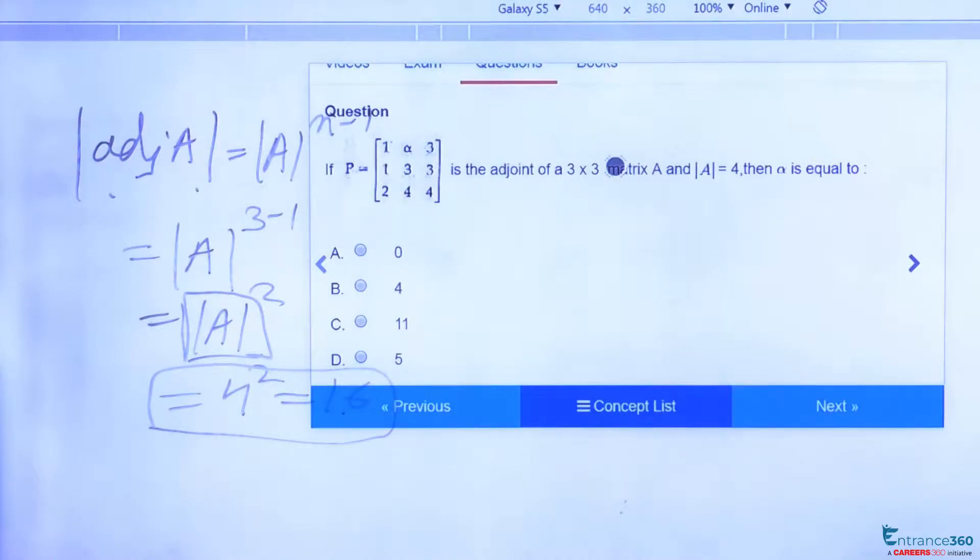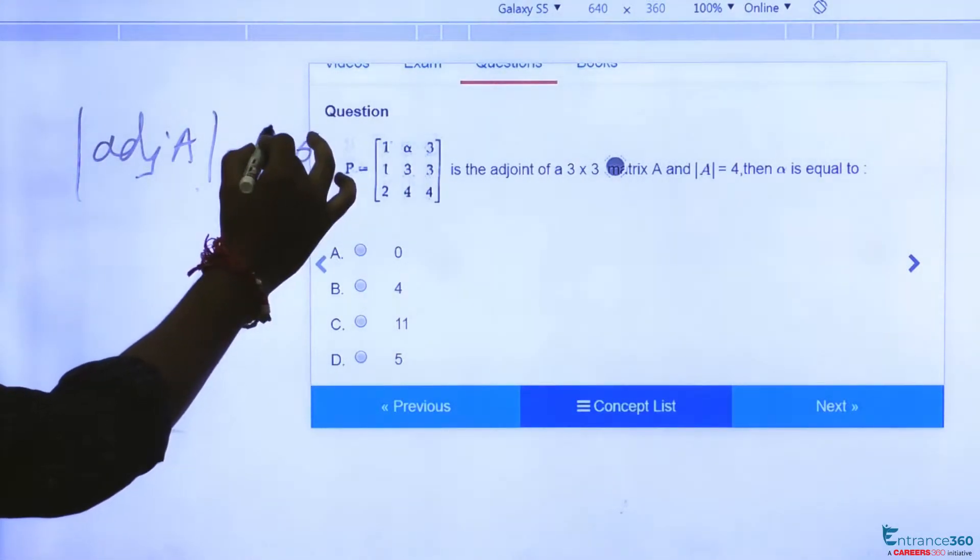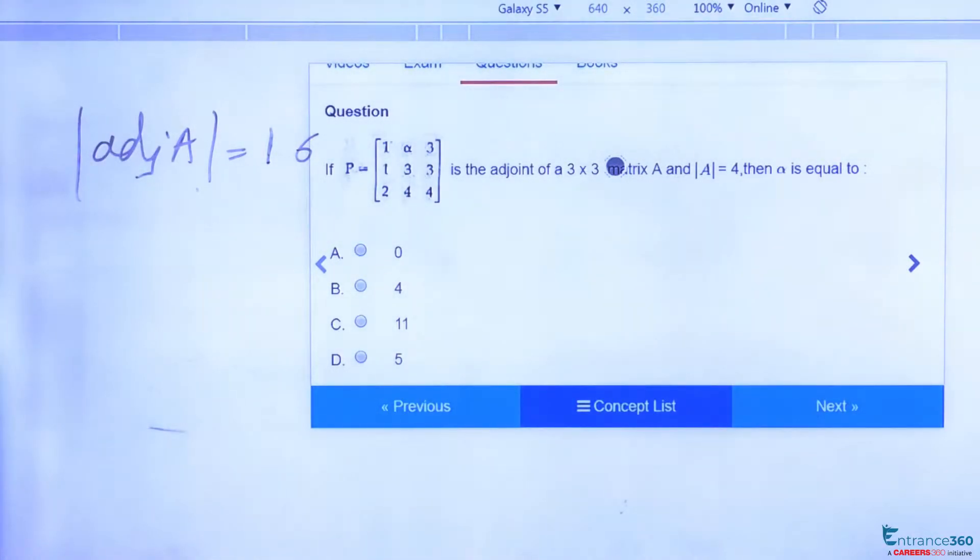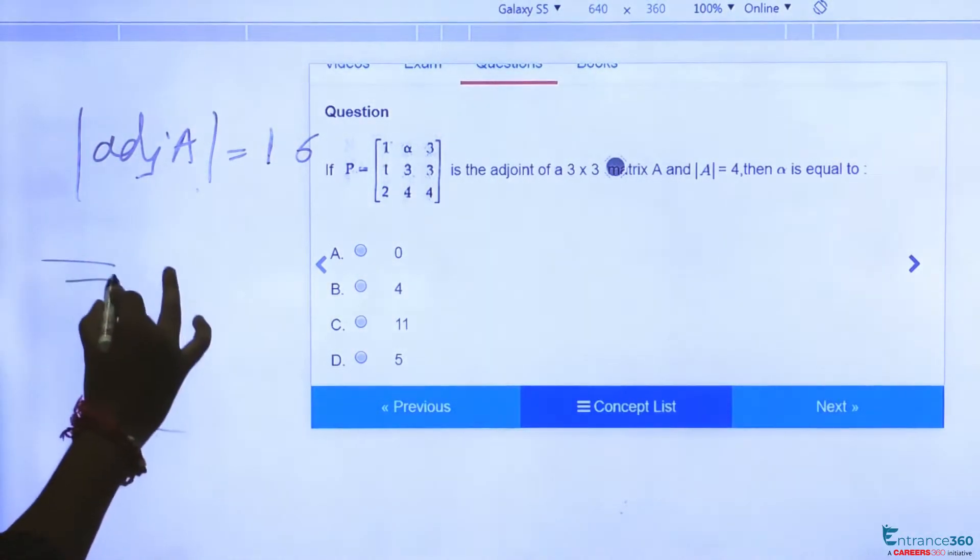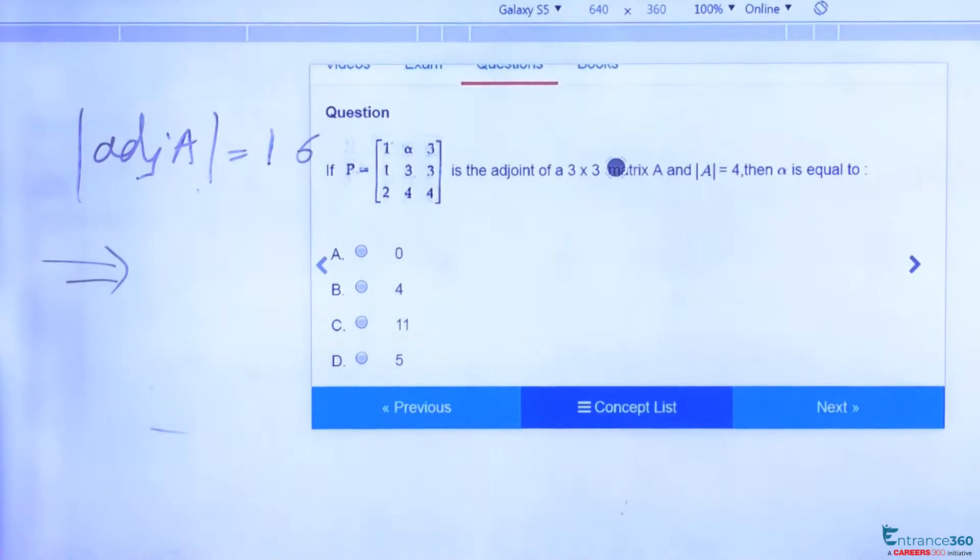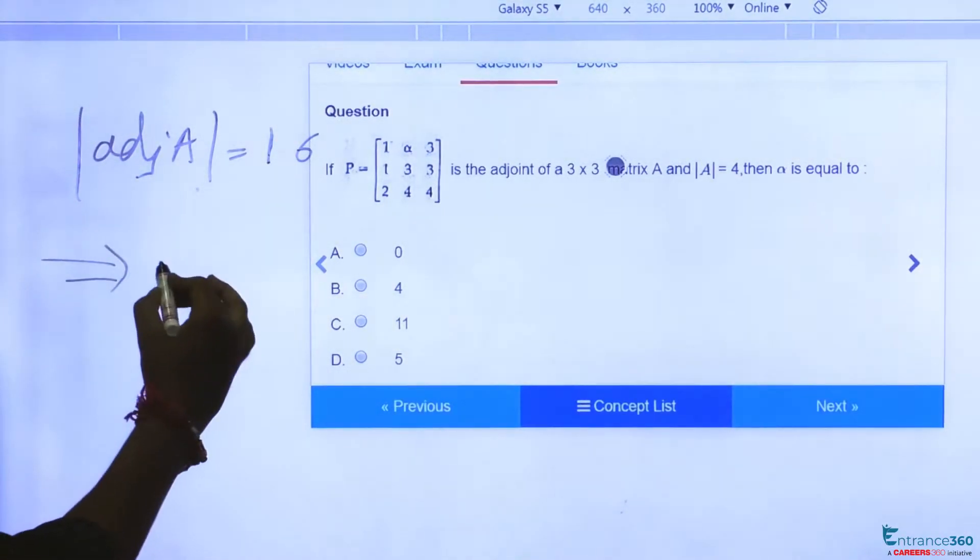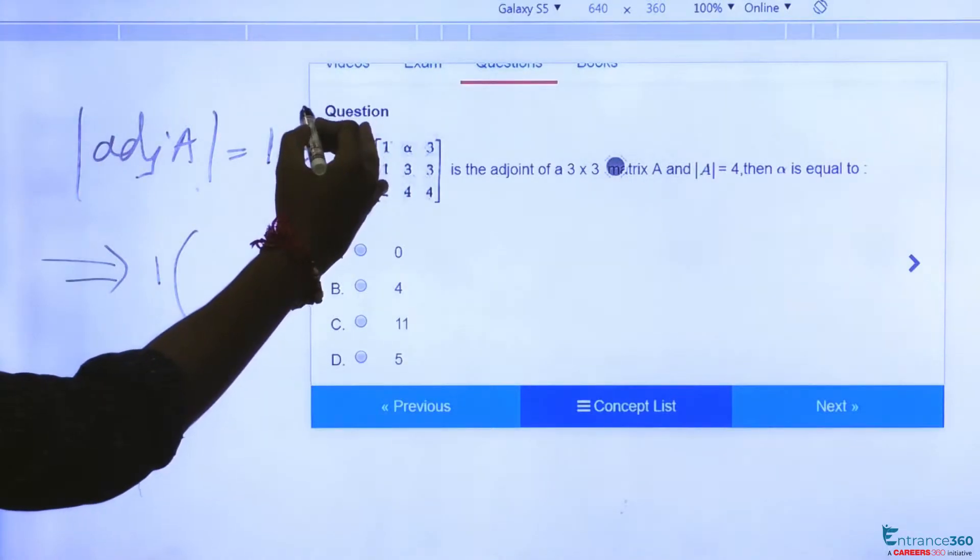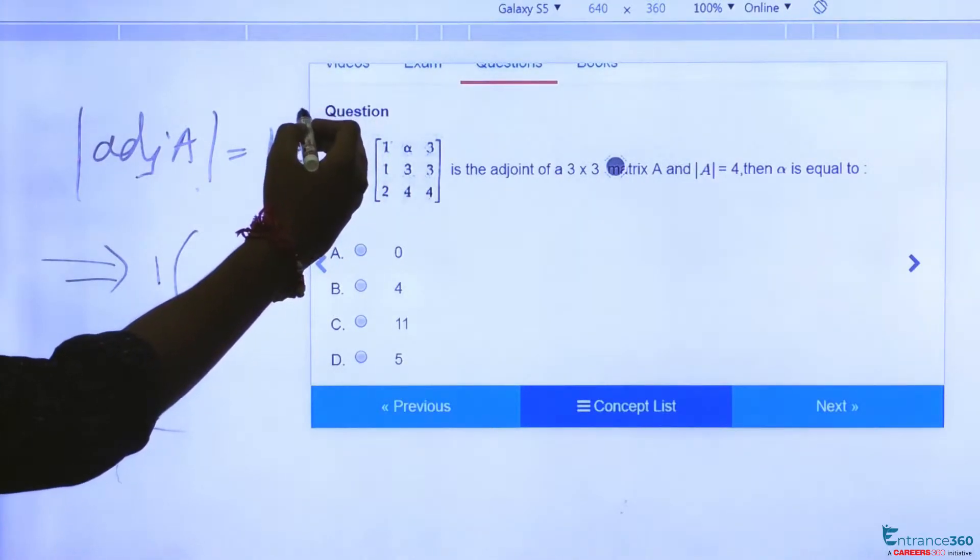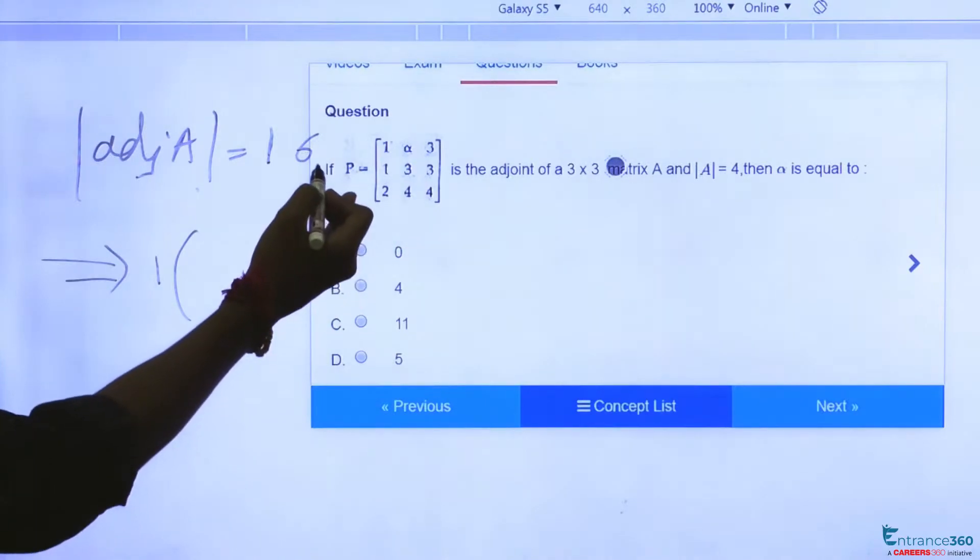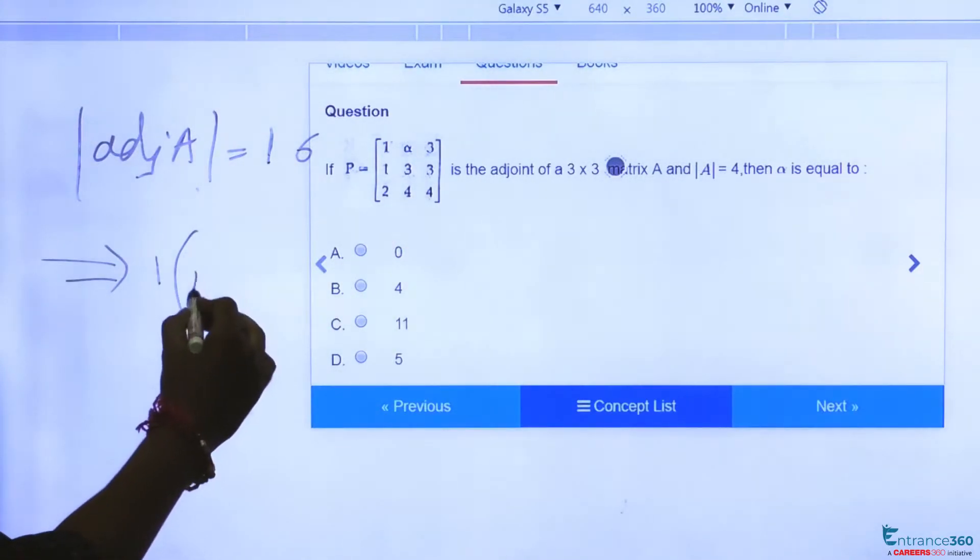Our matrix is [1, alpha, 3; 1, 3, 3; 2, 4, 4]. So we are going to expand this matrix with respect to row 1. Here I can write as 16, the value which we have found just now. To find the determinant we are going to expand through row 1, so our value will be 1 times (3×4 - 12), which is 12 minus 12.